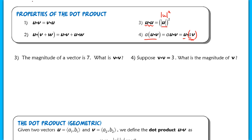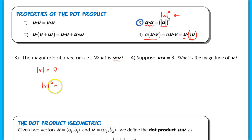Example 3: the magnitude of vector v is 7. What is v·v? Starting with |v| = 7, we use property three, which states that the dot product of a vector with itself equals the length squared. So v·v = |v|² = 7² = 49.